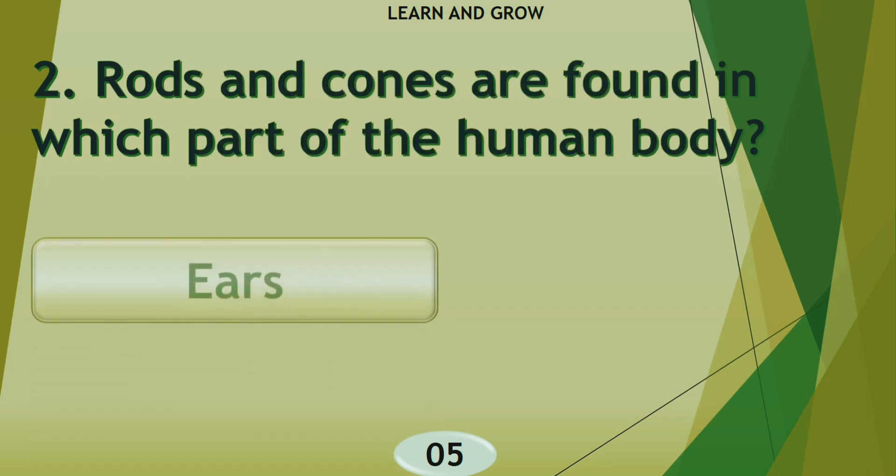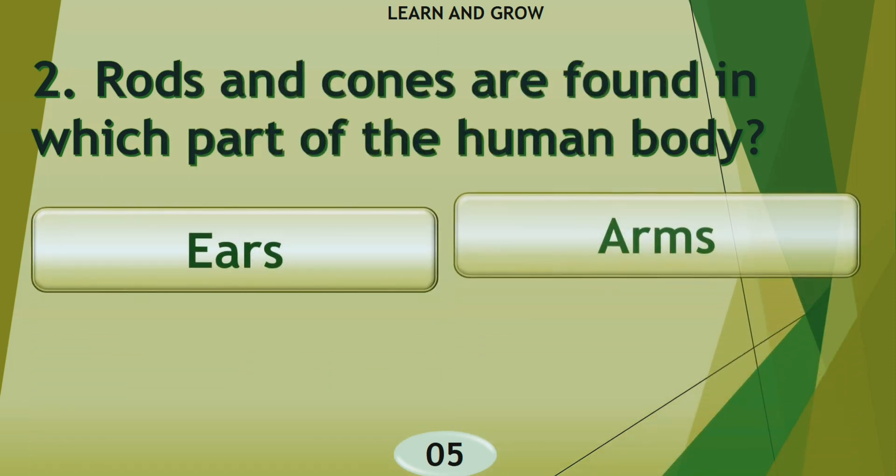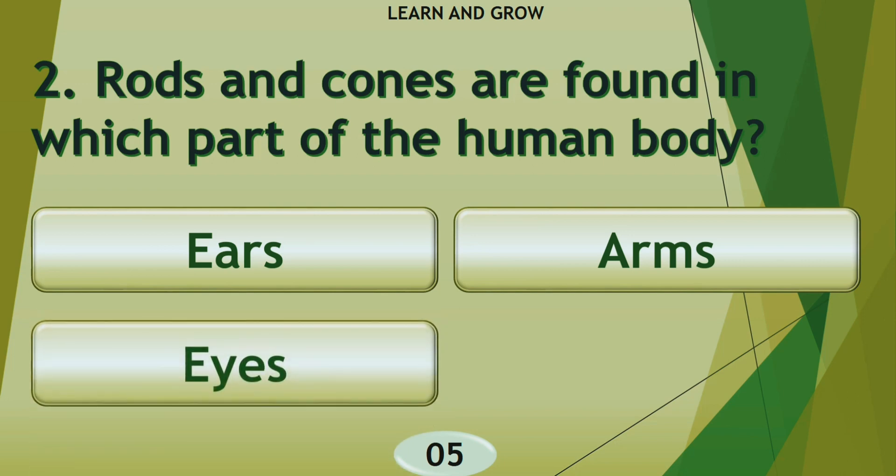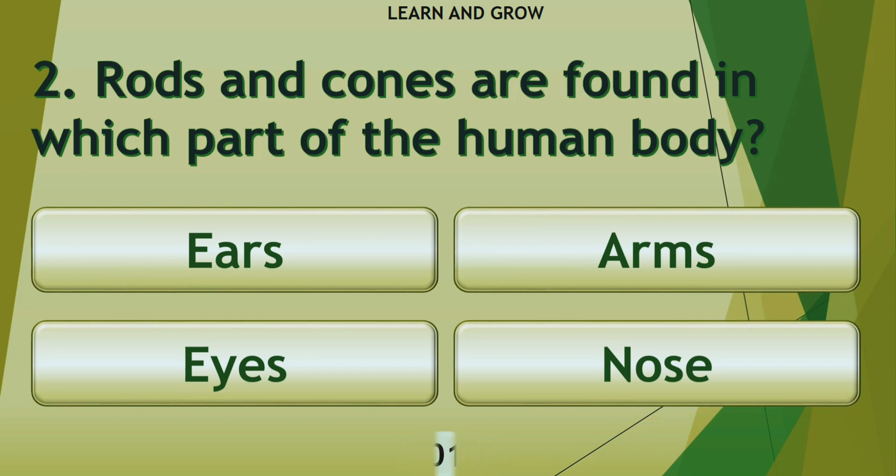Rods and cones are found in which part of the human body? Options are A: ears, B: arms, C: eyes, or D: nose. The right answer is eyes.